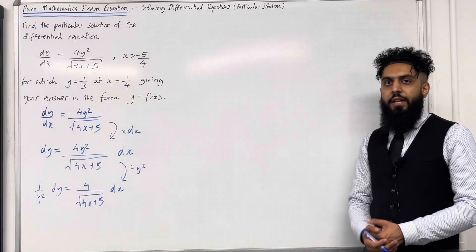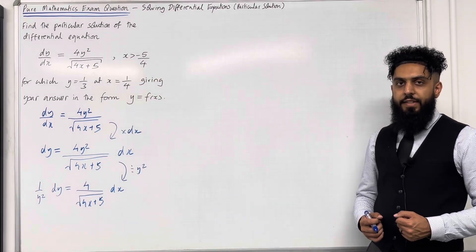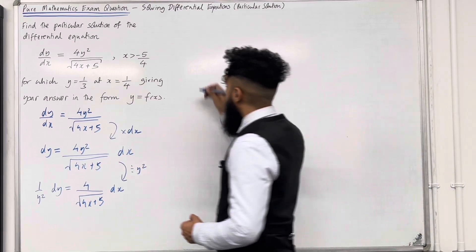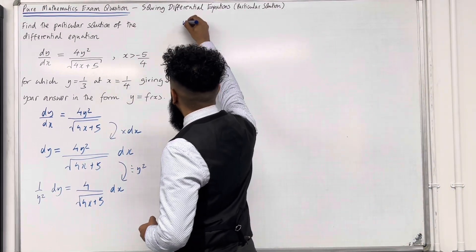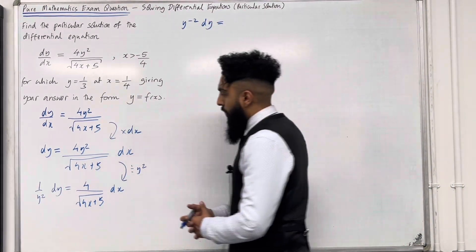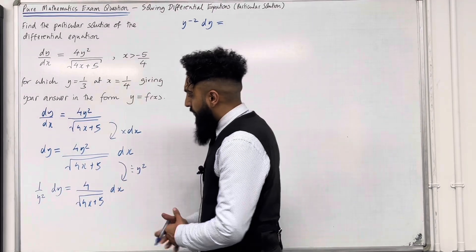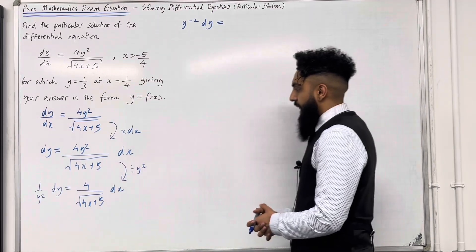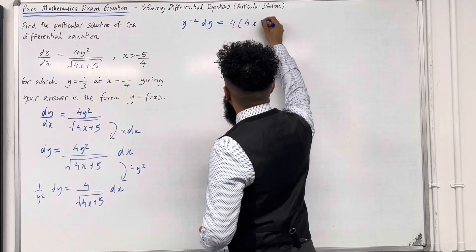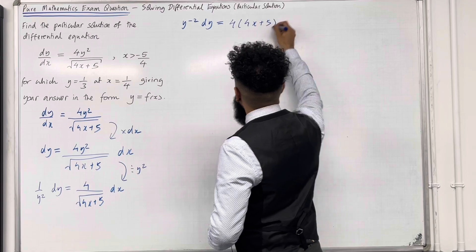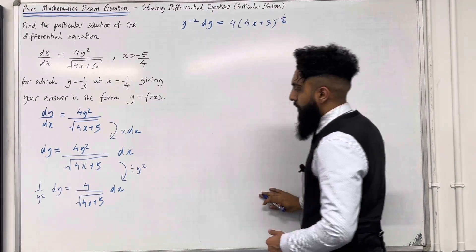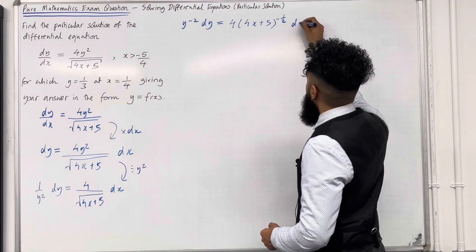Now, 1 over y squared using laws of indices is just y to the power minus 2. So I've got y to the power minus 2 dy equal 4 over square root of 4x plus 5, which is the same as writing 4 lots of (4x plus 5) to the power minus 1 half using laws of indices, dx.